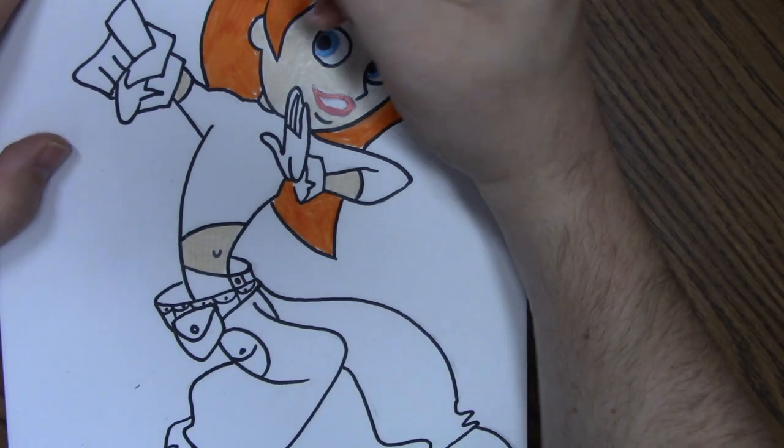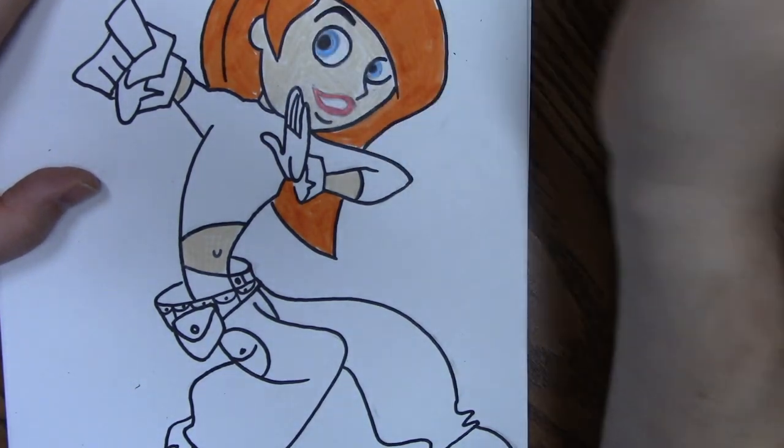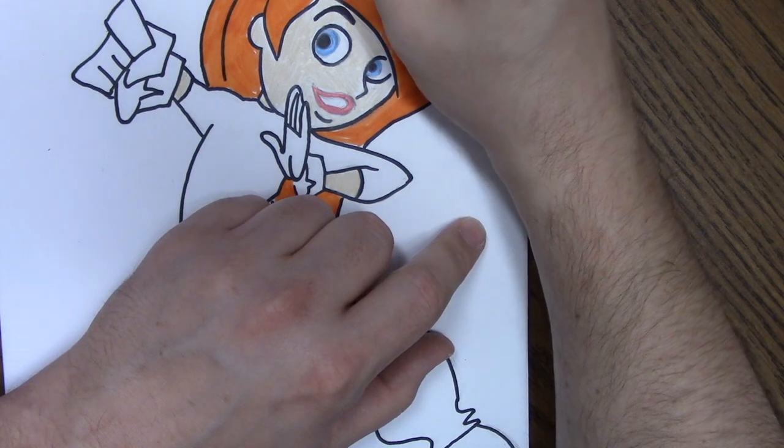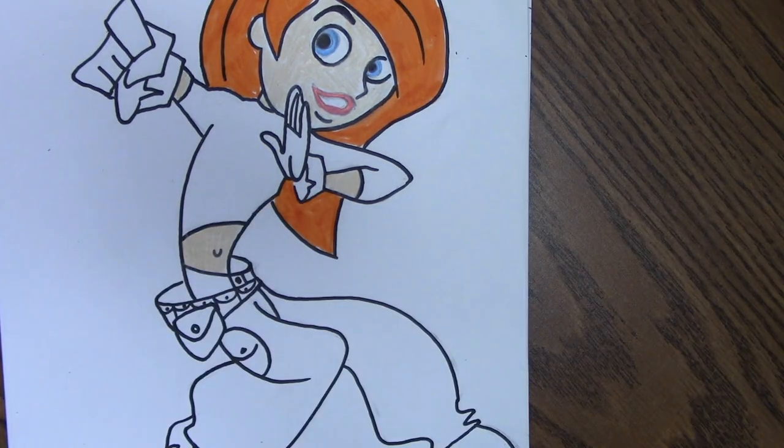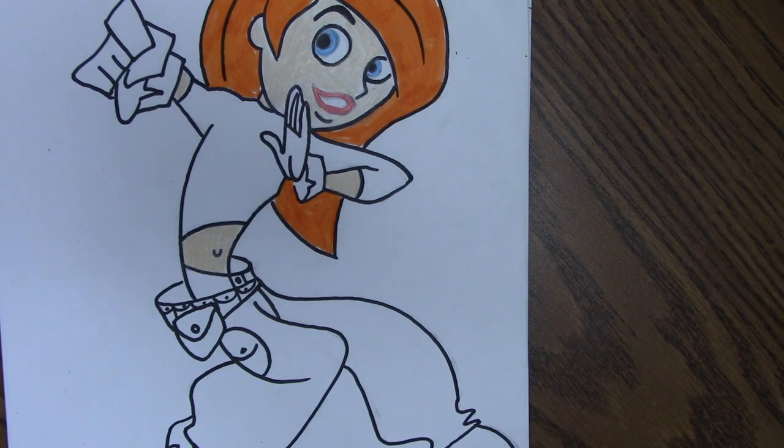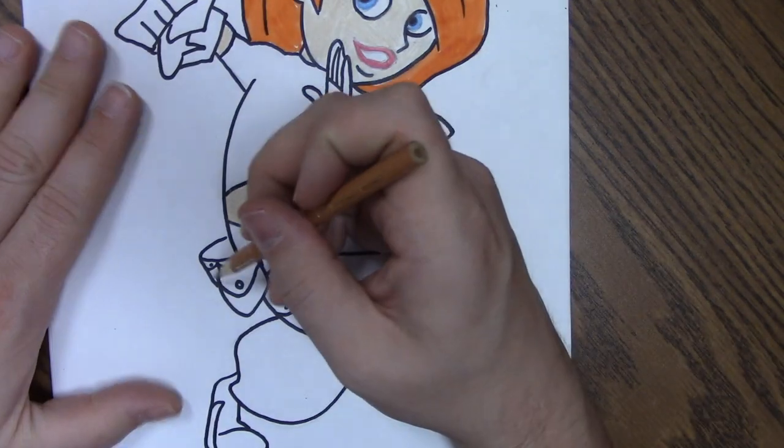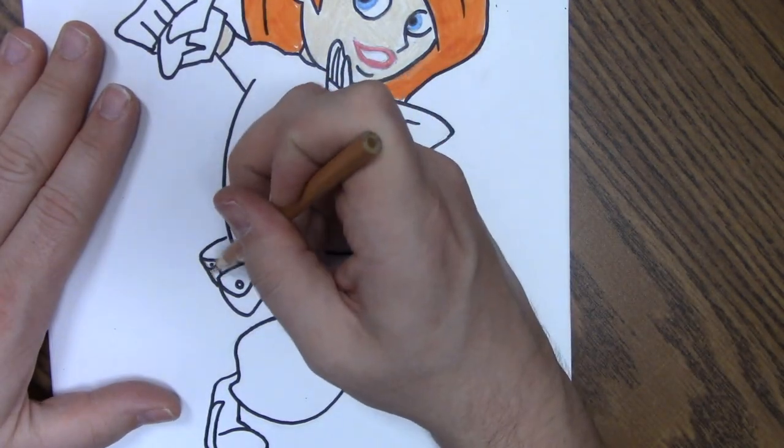Here we go. Let's put in some of those lines in the hair. Here, here, here, and there. We need brown for her belt. Just the belt, not the pocket.